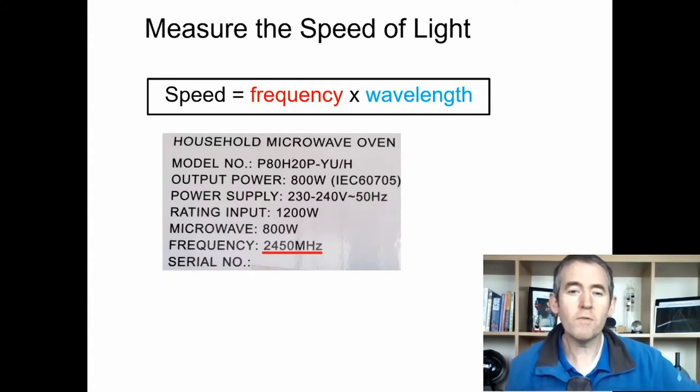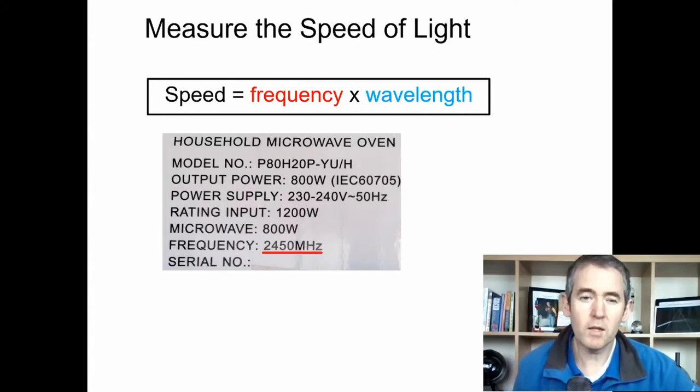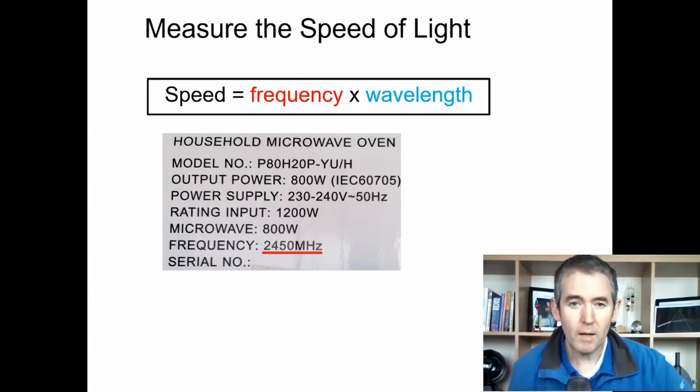So where do you find the frequency? Well the frequency is found on the back of your microwave. Written on the back of your microwave will tell you the frequency. My microwave has a frequency of 2450 megahertz, so that's 2450 million hertz or million waves per second.